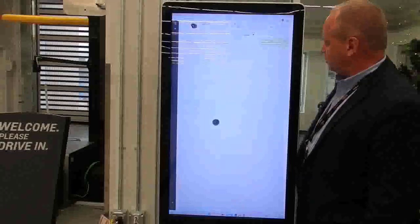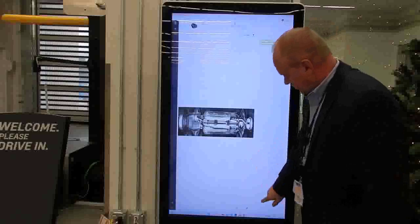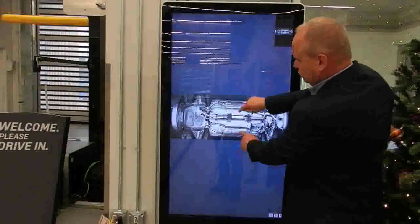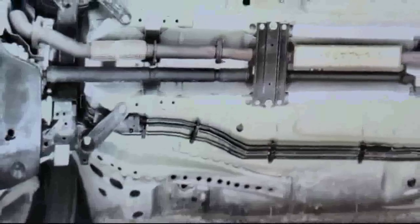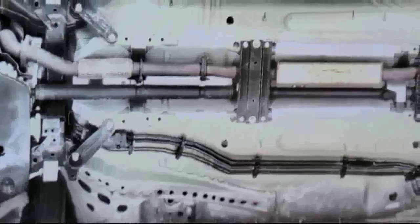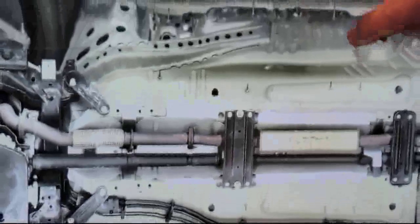You can also look at the undercarriage of the vehicle itself. You can zoom in with high-definition quality. You're able to zoom into the vehicle without putting the vehicle up on the hoist to look for any potential oil leaks, damage to the vehicle, or anything that might be elsewhere with the vehicle.